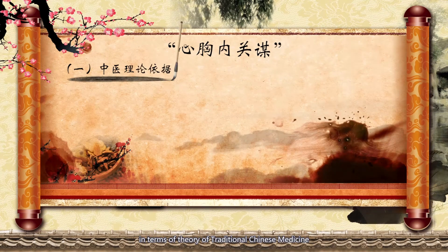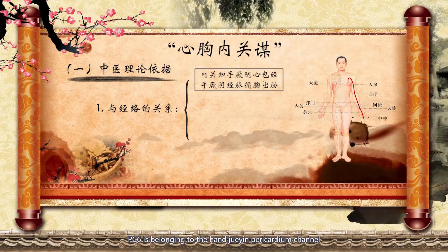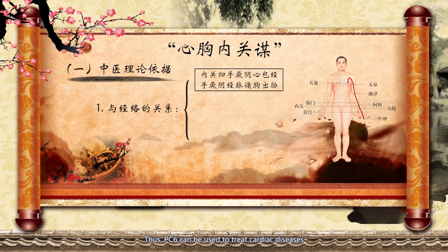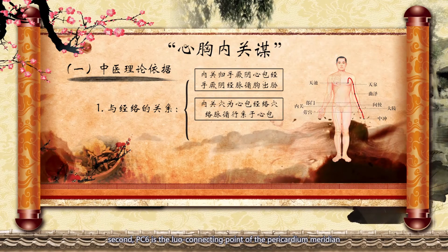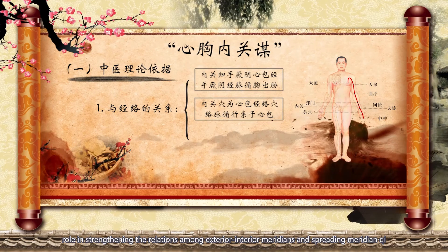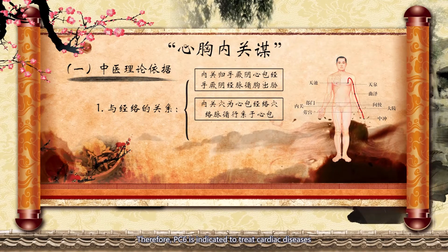In terms of traditional Chinese medicine theory, PC6 belongs to the hand Jueyin pericardium channel, and the chest is distributed along the course of the pericardium meridian, so PC6 can treat cardiac disease. Second, PC6 is the luo-connecting point of the pericardium meridian, which enters its paired organ along its course. The luo-connecting point plays an important role in stressing relations among exterior-interior meridians and spreading meridian qi. The Sanjiao meridian spreads in the chest to connect with the pericardium, so PC6 is indicated to treat cardiac disease.